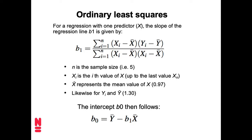Having calculated the value for the slope b1, we can then figure out where we cross the y-axis. That's the second formula: we take the average of y, subtract the average of x times the slope, and then we get the intercept b0.